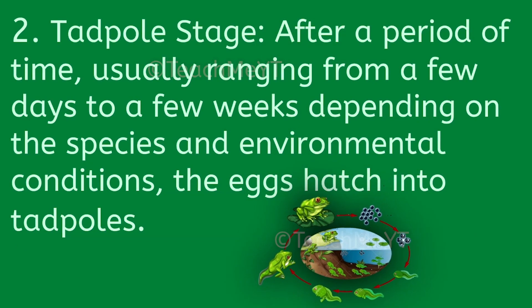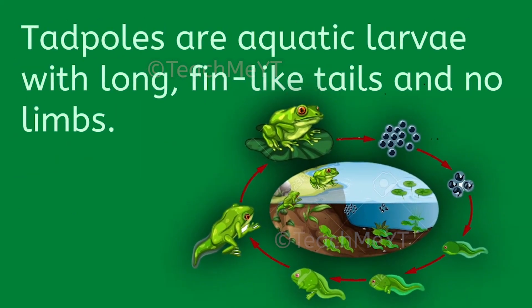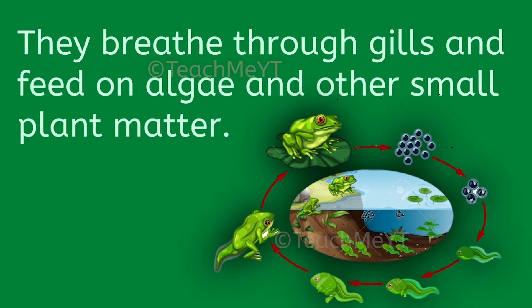Number 2: Tadpole stage. After a period of time, usually ranging from a few days to a few weeks, depending on the species and environmental conditions, the eggs hatch into tadpoles. Tadpoles are aquatic larvae with long, fin-like tails and no limbs. They breathe through gills and feed on algae and other small plant matter.